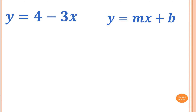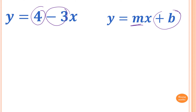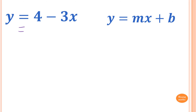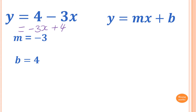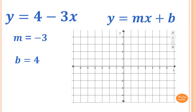Next question: y equals 4 minus 3x. The coefficient in front of x is minus 3, so the gradient is minus 3. The y-intercept is 4 because it's the constant. You can also rearrange it: 4 minus 3x is the same as minus 3x plus 4, so you can clearly see the gradient is minus 3 and the y-intercept is 4.